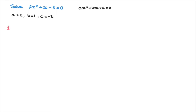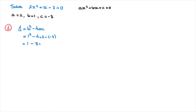Step one: we calculate the discriminant. Delta equals to b squared minus 4ac, and we have the values of b, a, and c. So b squared would be 1 squared, minus 4 times a, which is 2, times c, which is negative 3. That's equal to 1 minus 4 times 2, which is 8, times negative 3. That's equal to 1 minus 8 times negative 3, which is negative 24. Now 1 minus negative 24 turns into 1 plus 24. Finally, delta equals to 25.